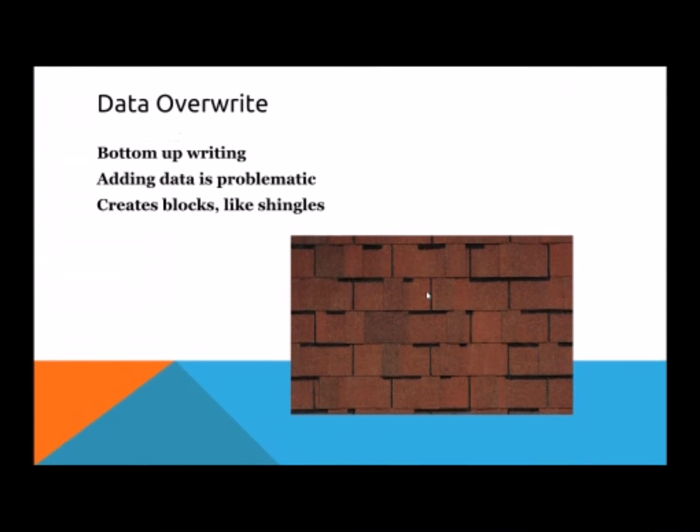Since SMR technology has such a great overall impact on the aerial density, you would think that more companies would be using this. Obviously, there is a very major problem that prevents the implementation of SMR. Using SMR, just like on a roof, you start from the bottom of the roof and go up since they overlap each other. This causes problems when we need to make edits inside of the stack or replace a shingle.